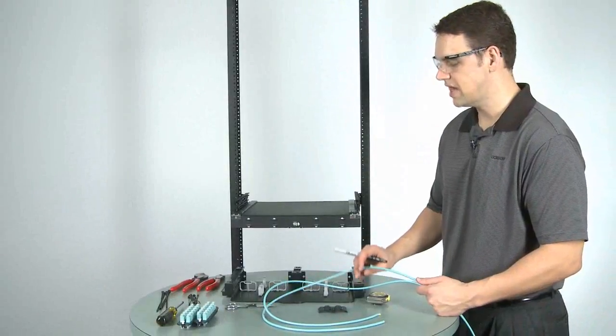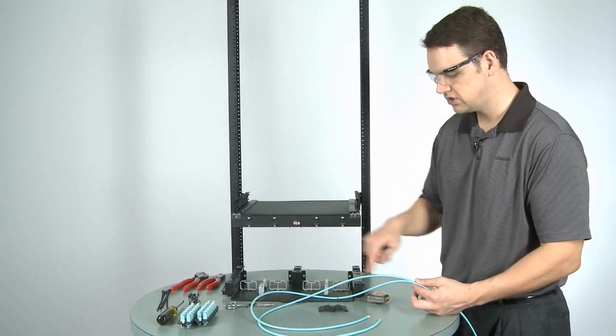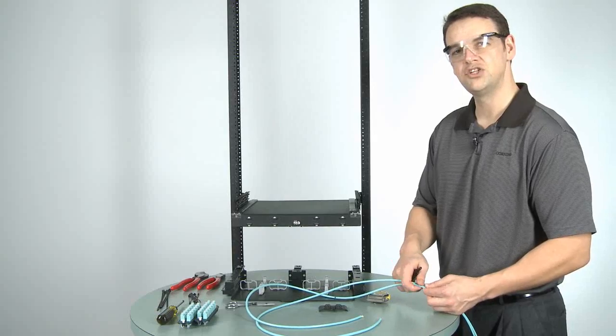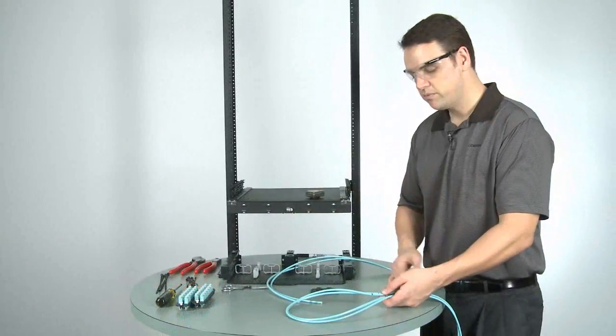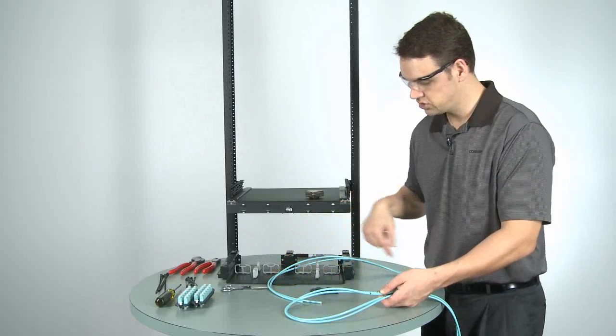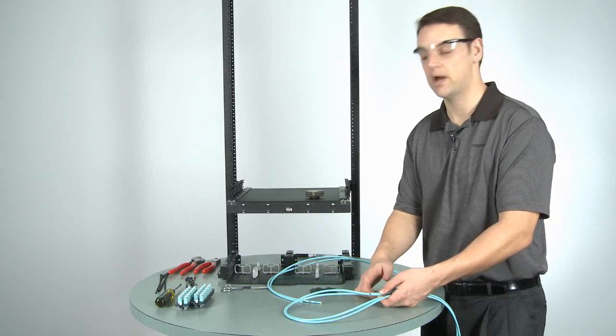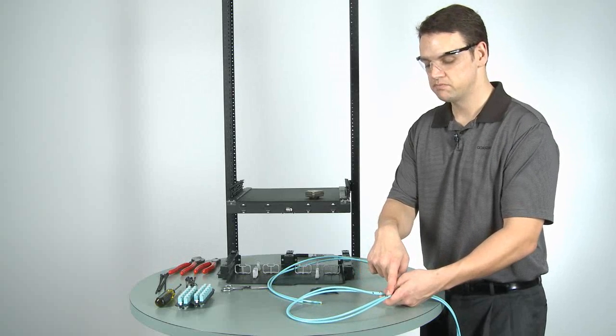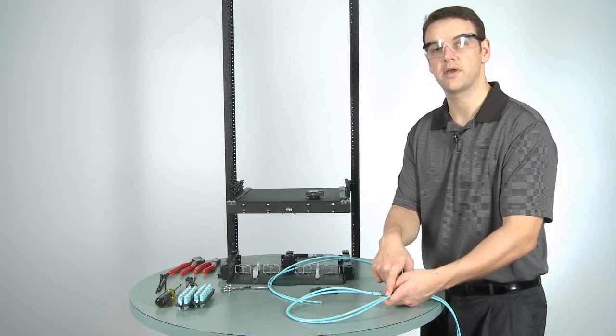I'm now going to take our tight buffered cable, and we need to place two marks on it. We need to measure 48 inches, and then from that 48 inches, we need to measure an additional 24 inches. Now that we've placed those two marks, here's the 48 inch mark, and this is what we're going to expose to access the 900 micron fiber on the inside. This mark right here is an additional 24 inches, and it's where we're going to strain relief our cable.